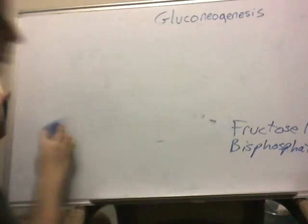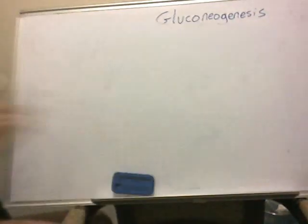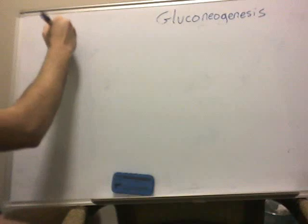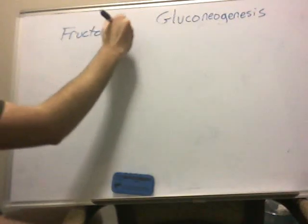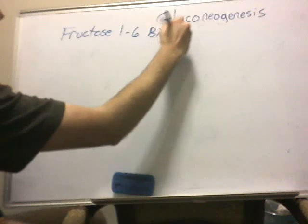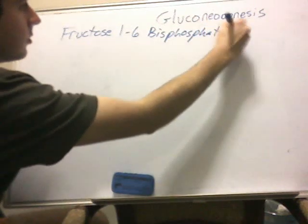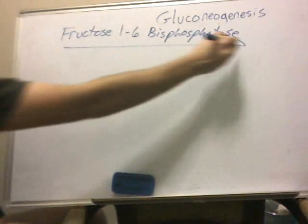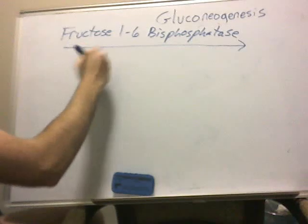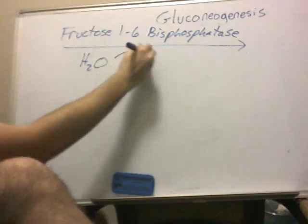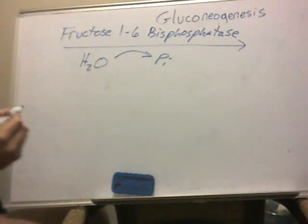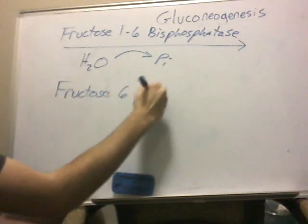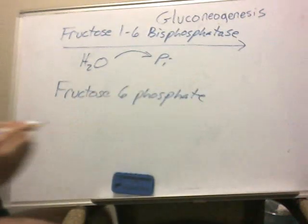So fructose 1,6-bisphosphate is exposed to fructose 1,6-bisphosphatase. This is a one-way reaction. We're actually going to have water going in and inorganic phosphate coming out. This is the phosphatase that's taking the phosphate away, and we're going to get fructose 6-phosphate, which should look familiar again.